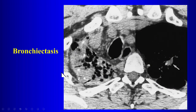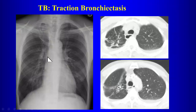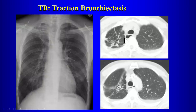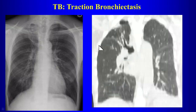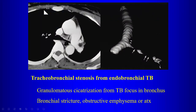Airway complications of TB include traction bronchiectasis from scarring. Notice the elevated hilum — a good sign of volume loss — along with reticular opacities representing scarring. On CT, the traction bronchiectasis is visible with the right upper lobe decreased in volume. The esophagus is shifted towards the side of scarring, which is a common appearance with upper lobe volume loss from TB.